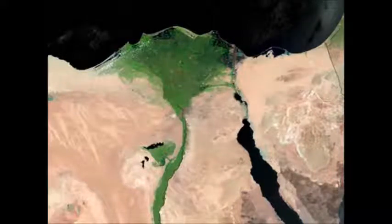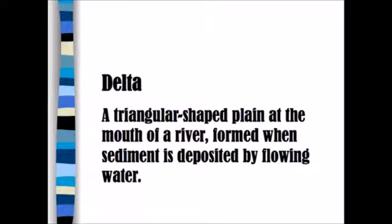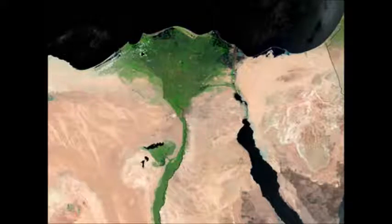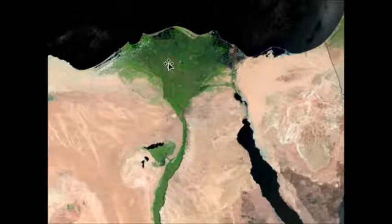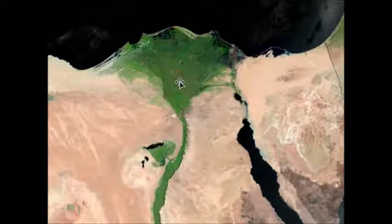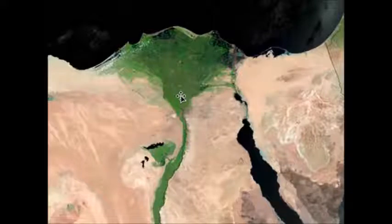Do you know what this is, and do you know where it is? Bonus points if you know that. This is a delta. A delta is a triangular-shaped plane at the mouth of a river — the mouth is the end of the river — formed where sediment is deposited by flowing water. Does anyone know where this particular delta is? It's called the Nile delta — it's in Egypt. I'd like you to write Egypt, E-G-Y-P-T, somewhere next to this picture. Make sure that E is capitalized.